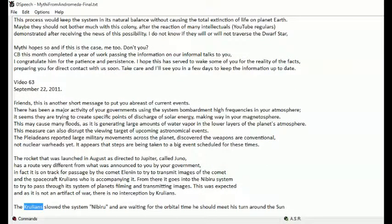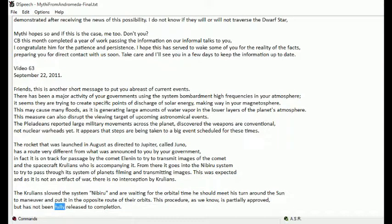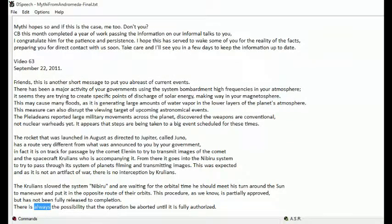The Krullians slowed the system Nibiru and are waiting for the orbital time he should meet his turn around the sun to maneuver and put it in the opposite route of their orbits. This procedure, as we know, is partially approved but has not been fully released to completion. There is always the possibility that the operation be aborted until it is fully authorized.